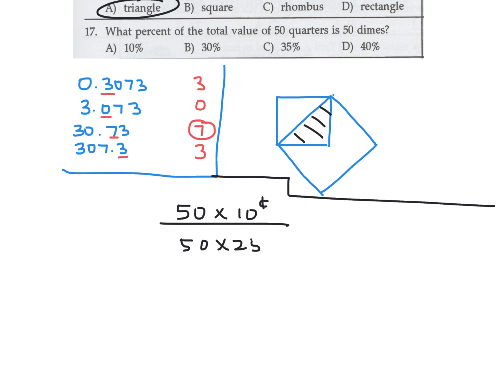What percent of the total value of 50 quarters is 50 dimes? 50 dimes is 50 times 10 cents; 50 quarters is 50 times 25 cents. That simplifies to 10 over 25, which is 40 percent. So 40 percent — answer D for number 17.